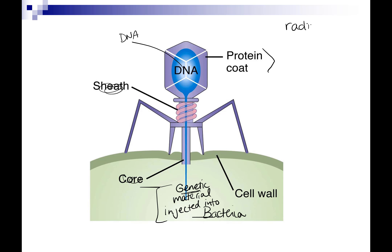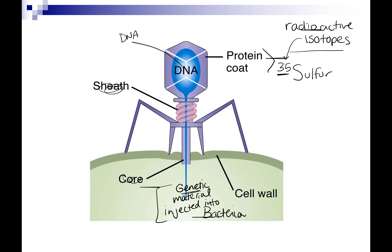To answer this, they used radioactive isotopes — different versions of the same element that emit energy we can measure. For protein, they used S35, a radioactive form of sulfur, because some proteins have sulfur in their amino acids. This allowed them to radioactively label the proteins and track where they went in a mixture.